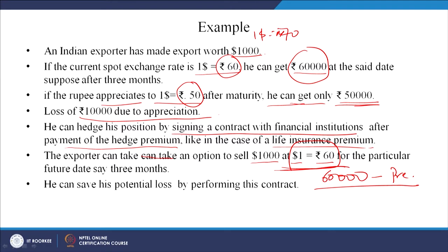On the other hand, instead of appreciating, had the rupee depreciated to 70, he would have got 70,000 rupees and would not have needed to pay the premium. The difference now is more than 10,000 - it is 70 minus 60 minus the premium. But the question is we are not looking only at profits; we have to protect ourselves from the risk, and the risk can be that it appreciates much higher.